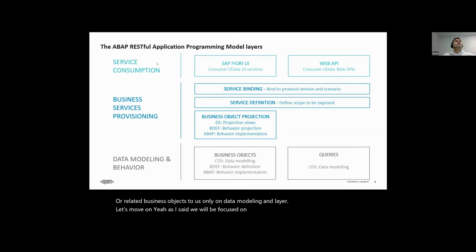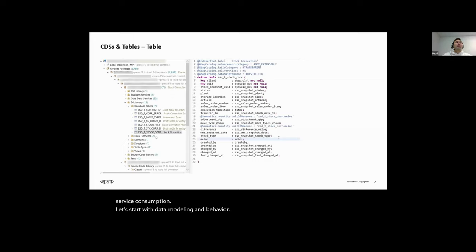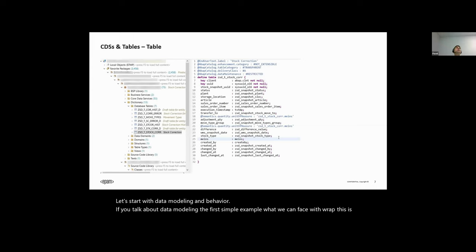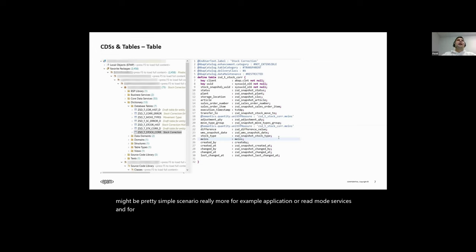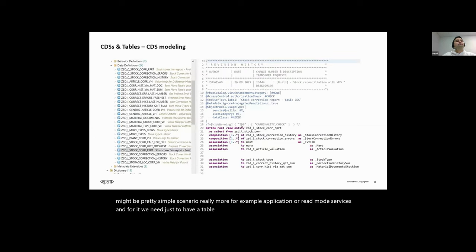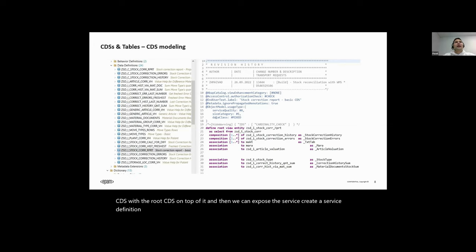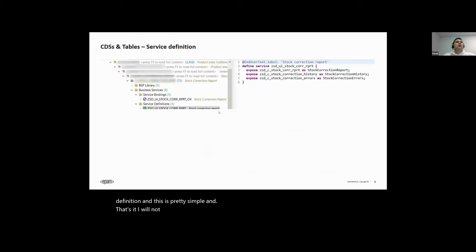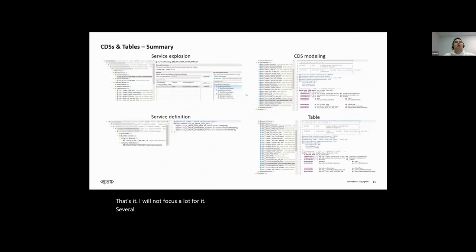Let's start with data modeling and behavior. The first simple example we can face with RAP is a read-only scenario — for example, a read-only application or service. For this we need just a table, a CDS view on top of it, and then we can expose the service by creating a service definition. It's pretty simple: table, CDS, definition, and exposure.